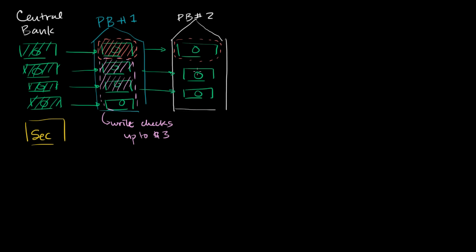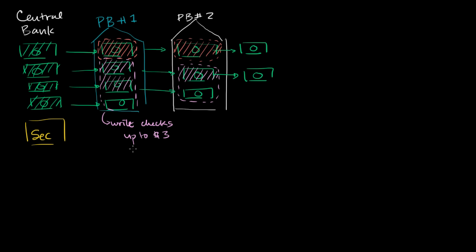Here in private bank number 2, the $2 are deposited into a checking account. Private bank 2 has to keep some reserves; let's say it's even more conservative and only lends out half — one of these dollars — even though it could lend out 90%. The person they lend it to puts that dollar in their wallet. They could also lend out the entire savings dollar, and that person also puts it in their wallet. Notice the original $4 are still there: one, two, three, four. The first person can write checks up to $3, and someone here can write checks up to $2.